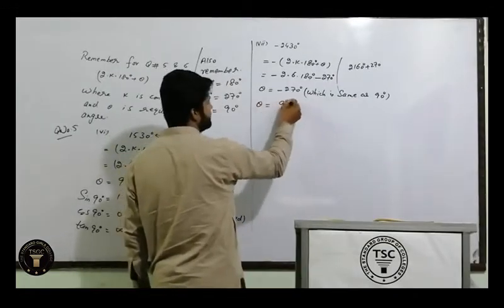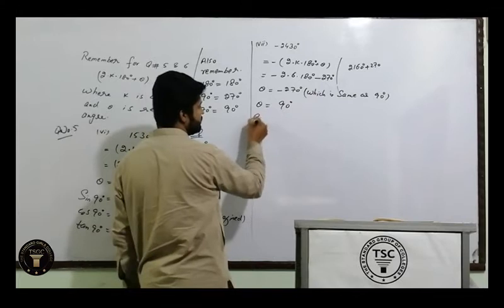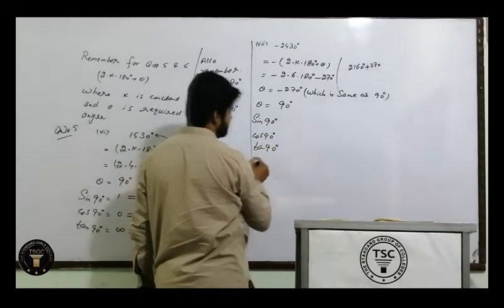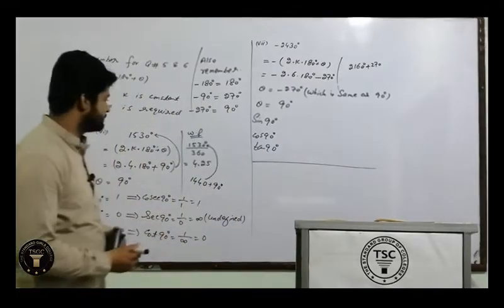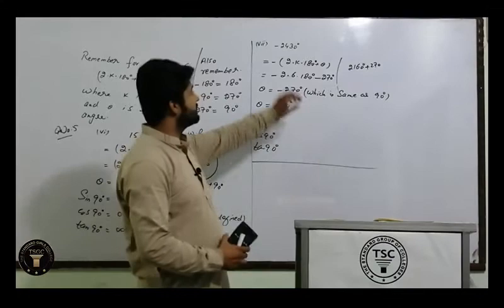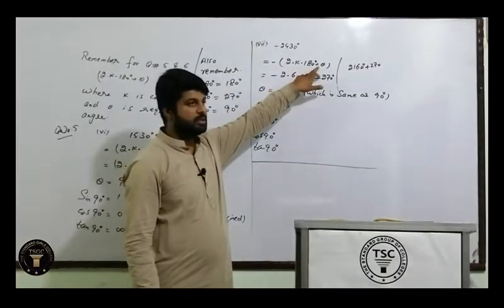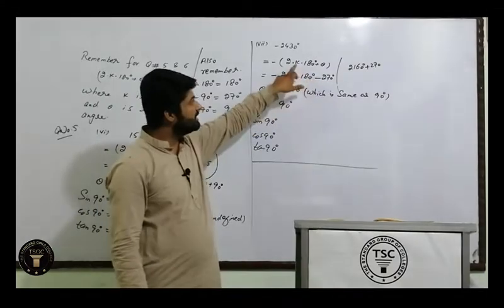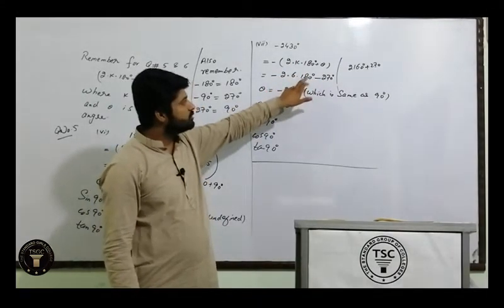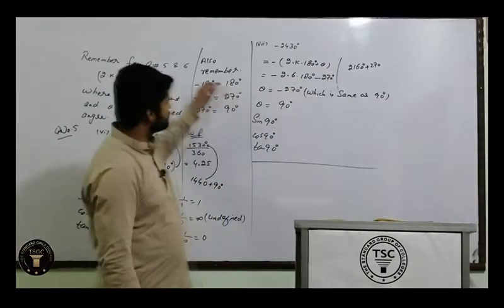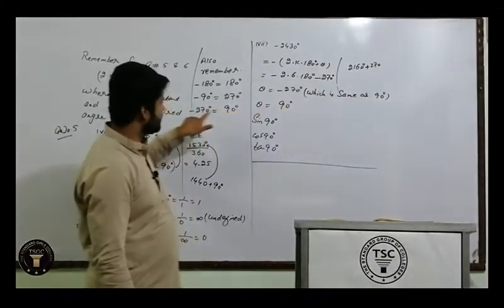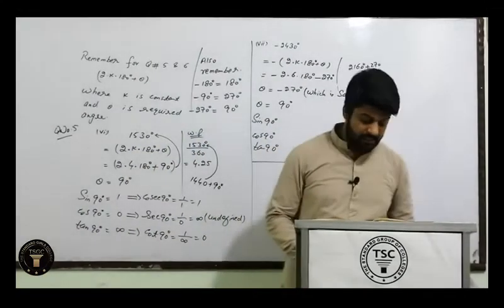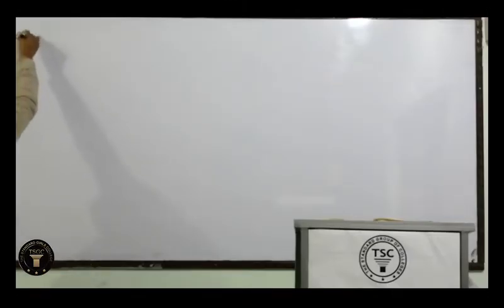Toh aapne iski jagah 90° likh dena hai. 90° hamaara answer hoga. Uske baad wahi trigonometric values find karni hain: sin 90°, cos 90°, tan 90° aur unke 3 reciprocals. Summary: jo bhi angle ho, formula apply karo 2k·180 + θ; k ki value ke liye angle ko 360 se divide karo; point se pehle ki value = k.